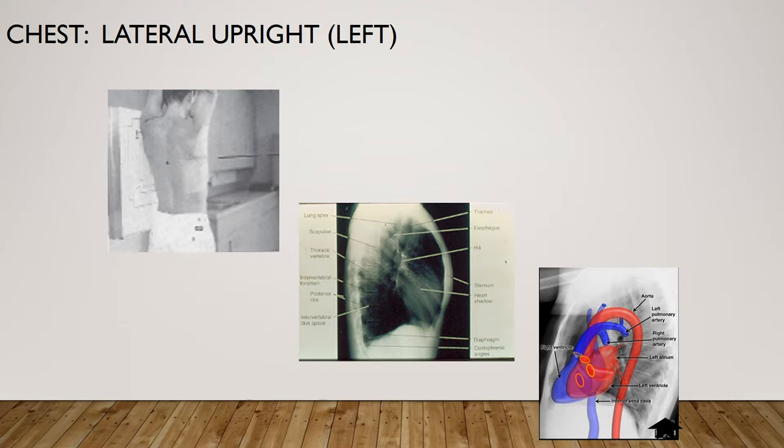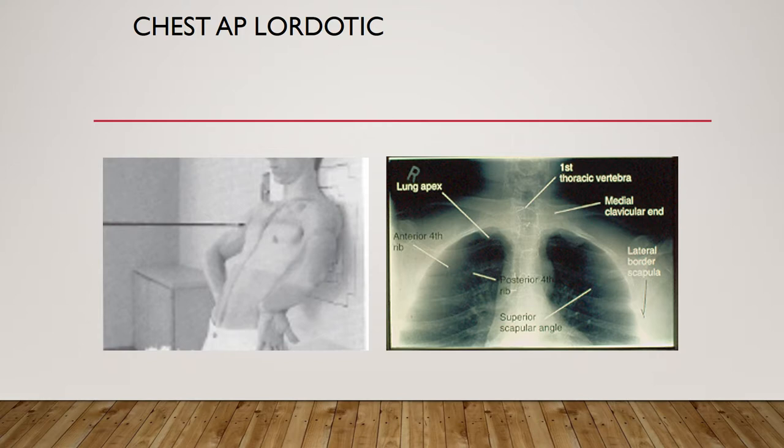PA and lateral chest x-rays should be taken with a grid if you have an adult patient at 6 feet SID. Anytime you're using a grid at 6 feet, make sure your kVp is about 110 to 125. You are going to be shooting at about 200 mA large or higher, and then all you need to think about is your time in milliseconds — that's the only parameter that needs to be changed.